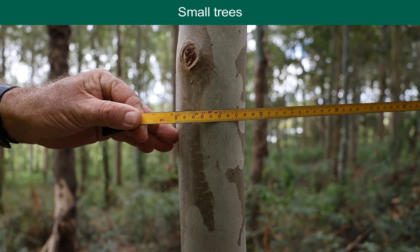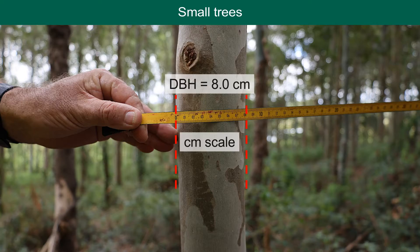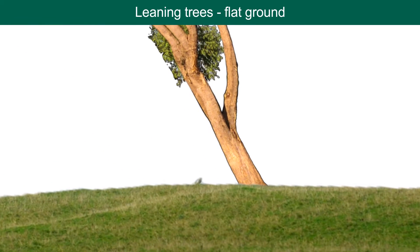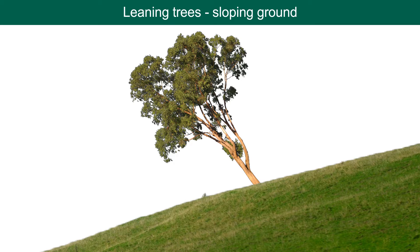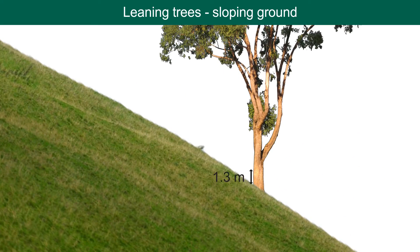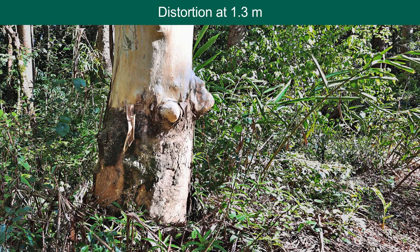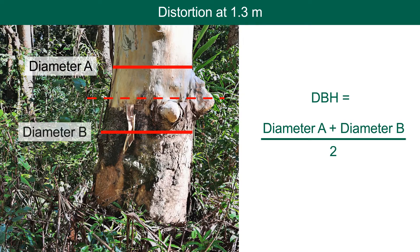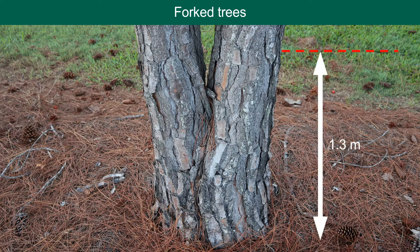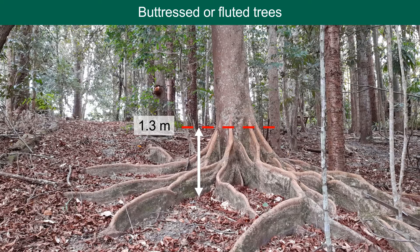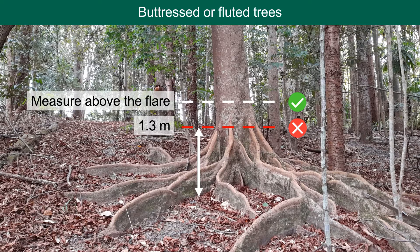If the stem is too small to wrap the diameter tape around, the reverse side of the tape may be used to measure the diameter. In most forest inventories, trees with a DBH less than 10 centimetres are not included in the measurements, as they add little to the total volume of the forest. For leaning trees on level ground, measure 1.3 metres from the ground on the underside of the tree and wrap the diameter tape perpendicular to the stem. For a leaning tree on sloping ground, imagine rotating the earth so that the tree is vertical and then locate the measure point as for a tree on a slope. If a tree is distorted at 1.3 metres by branching or swelling, measure the diameter at an equal distance above and below 1.3 metres, and use the average of these two measurements. If the tree splits into two or more stems below 1.3 metres, each stem is measured as if it were a separate tree. If you come across a tree with buttressing or fluting at 1.3 metres, measure above the flared part of the stem and make a note of the measure height for the next time you carry out an inventory.